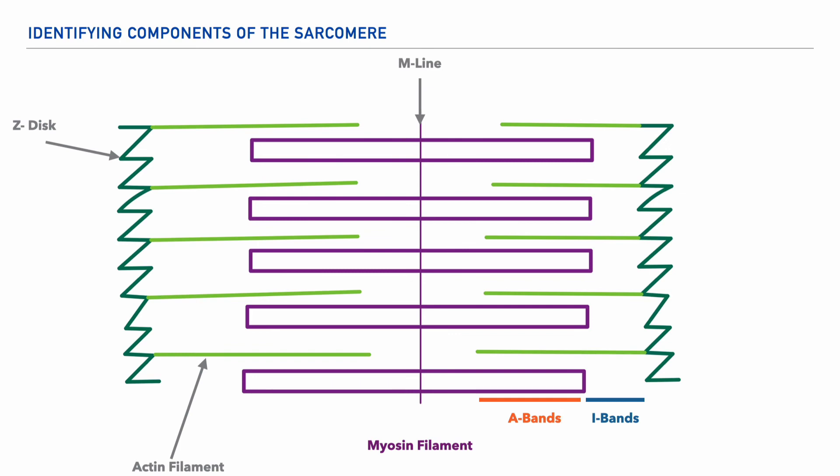And lastly, the portion that only shows the myosin filament is referred to as the H-zone.